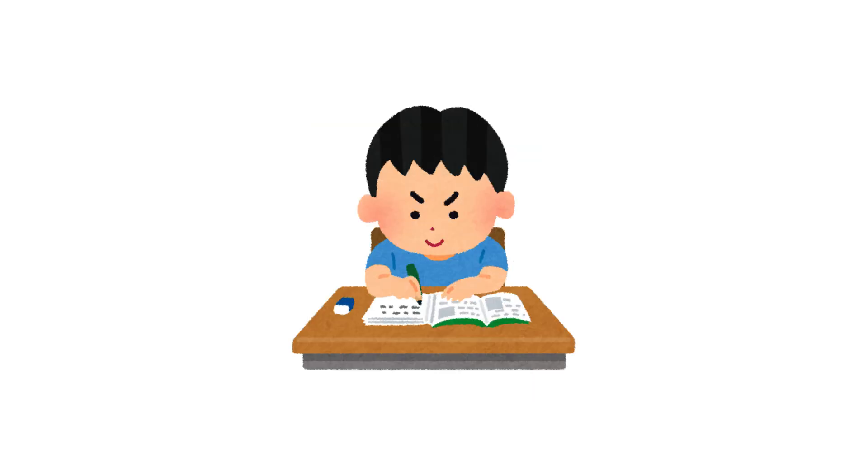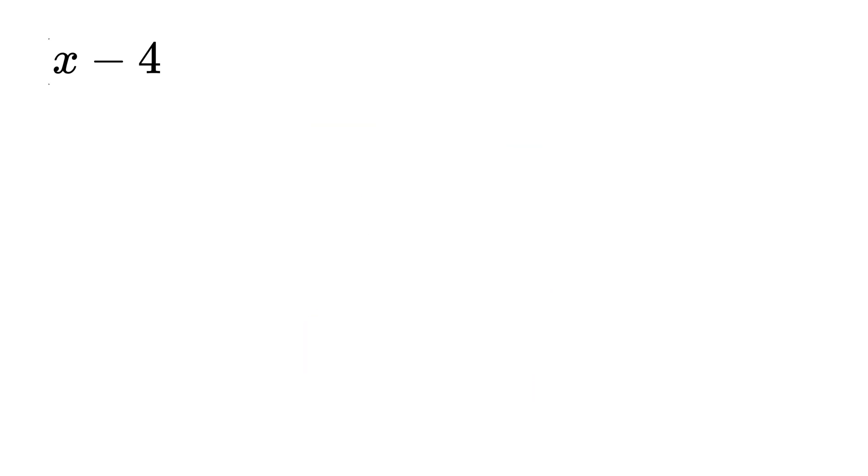How to solve for x given the equation x minus 4 inside bracket power 4 equals x to the power 4.